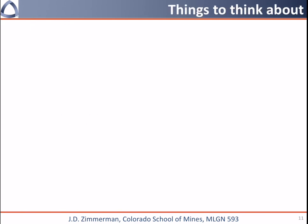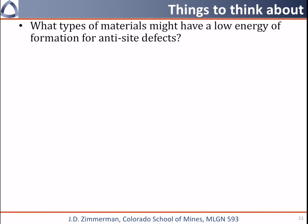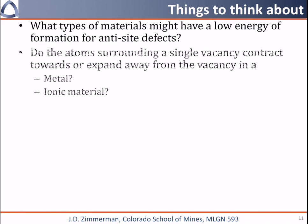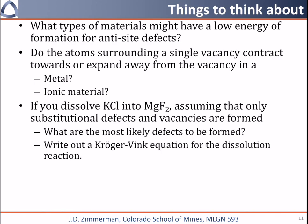I have a few things I'd like you to think about. First, what type of materials might have a low energy of formation for anti-site defects? Second, how do the atoms surrounding a vacancy respond to its creation — do they contract towards the vacancy or move away from it? Think about this for both a metal and an ionic material. Finally, practice Kroger-Vink reaction equations by dissolving potassium chloride into magnesium fluoride, assuming you only form substitutional defects and any vacancies necessary to balance the equation. First think about what the most likely defects are, then write out the equation. Thanks, I'll see you in class.